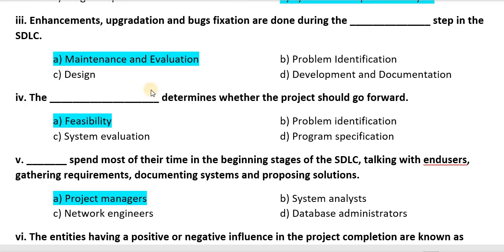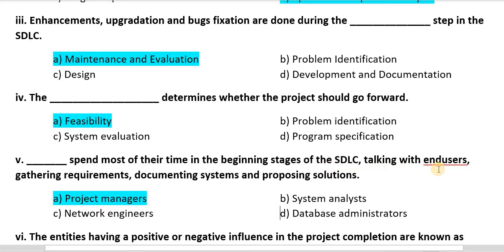Question four: The blank determines whether the project should go forward — (A) Feasibility, (B) Problem Identification, (C) System Evaluation, or (D) Program Specification. Correct option is Option A, that is Feasibility. Question five: Blank spend most of their time in the beginning stages of the SDLC talking with end users, gathering requirements, documenting systems and proposing solutions — (A) Project Manager, (B) System Analyst, (C) Network Engineers, or (D) Database Administrators. Correct option is Option A, that is Project Managers.